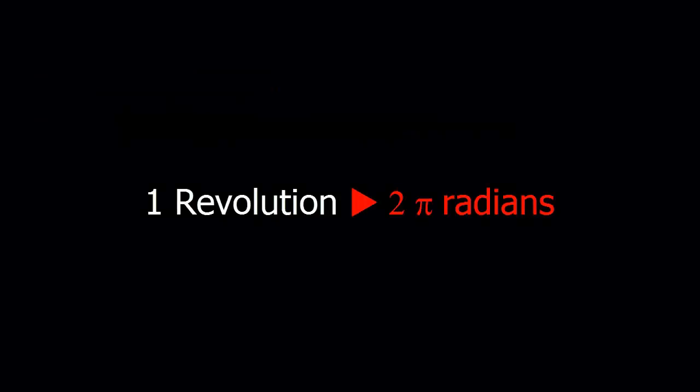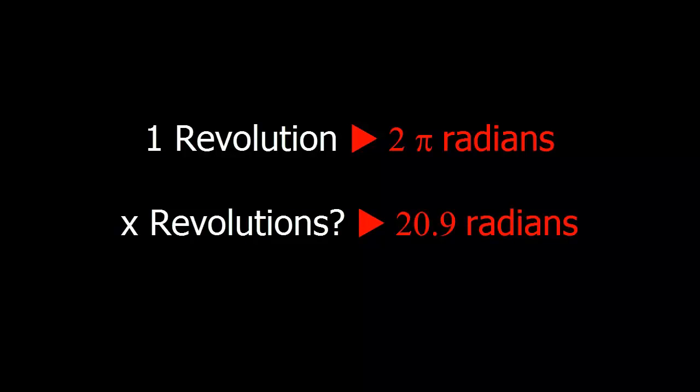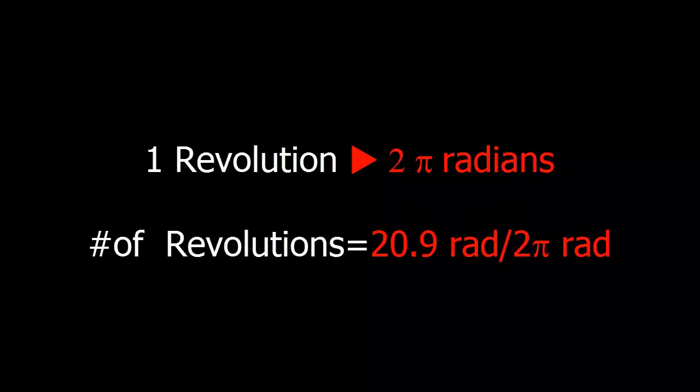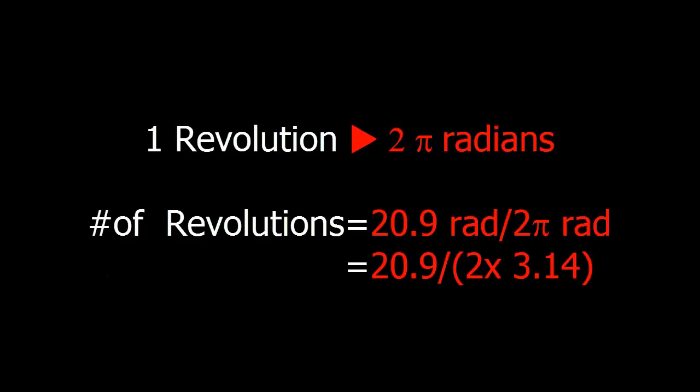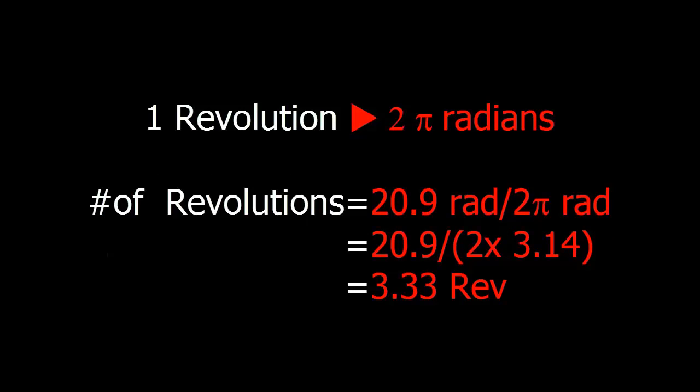To link it to revolutions, you have 20.9 radians divided by 2 pi radians per revolution. Each revolution is 2 pi. The radians cancel out. And we have 3.33 revolutions.